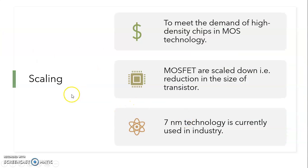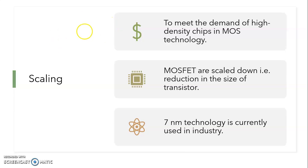Scaling: as we know, the chip size is reducing, but the density of the chip is increasing. For example, the smartphones we are using right now are more compact, but the functions we can perform in our mobile phones — if we compare with 10 years ago — show that more functions can be done in more compact devices. This is possible due to scaling of transistors.